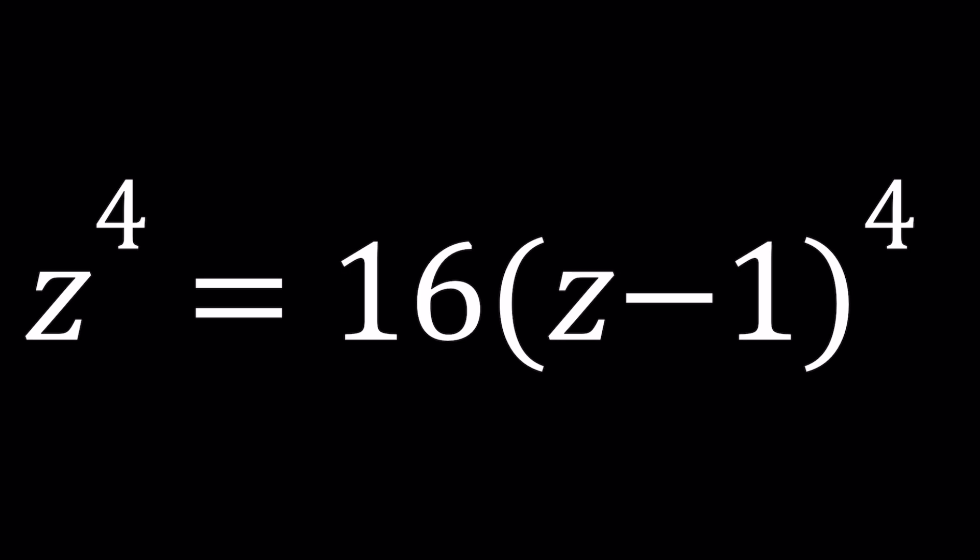We have z to the fourth power equals 16 times z minus 1 to the fourth power, and we're going to be solving for z values. I'll be presenting four methods, even though the fourth one will probably be incomplete. Let's start with the first one.